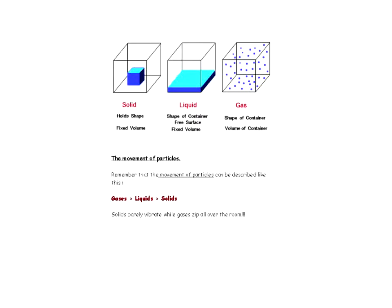Here is a diagram showing the difference between solids, liquids, and gases. Both liquids and gases take the shape of the container they're in. Gases take the shape of the whole container, while liquids just take the shape of the bottom.